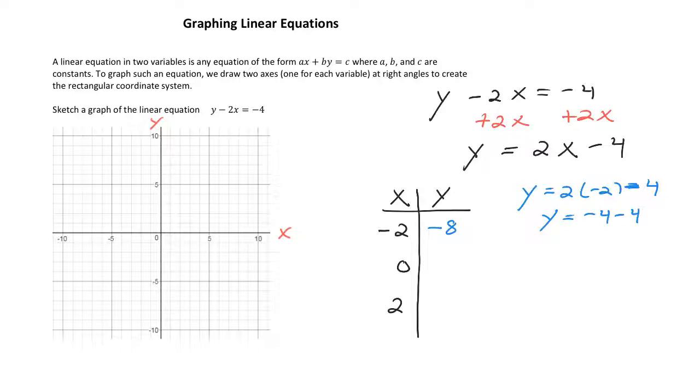Then for 0, Y is equal to 2 times 0 minus 4. That's just 0 minus 4, which is negative 4. And then for positive 2, Y is equal to 2 times 2 minus 4. So Y is equal to 4 minus 4. That is 0.